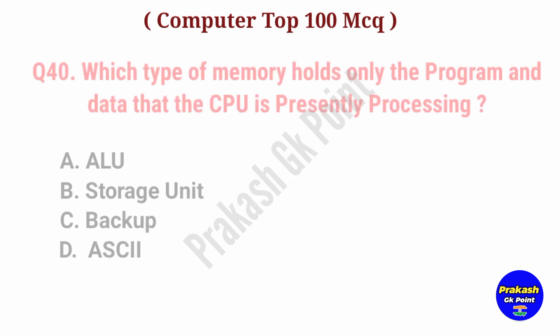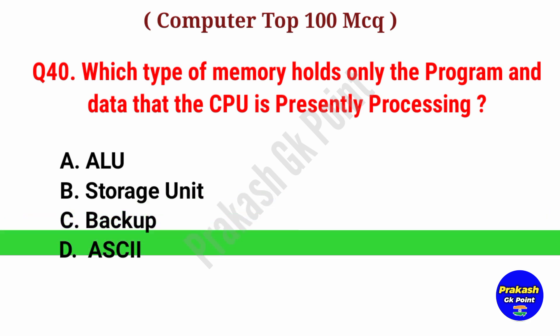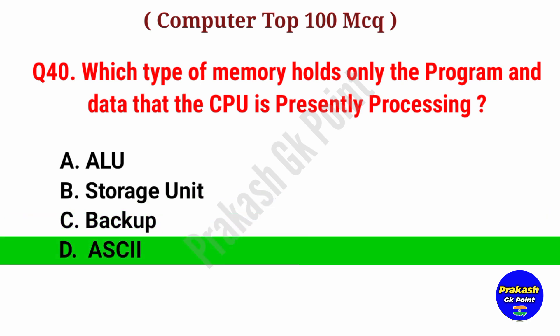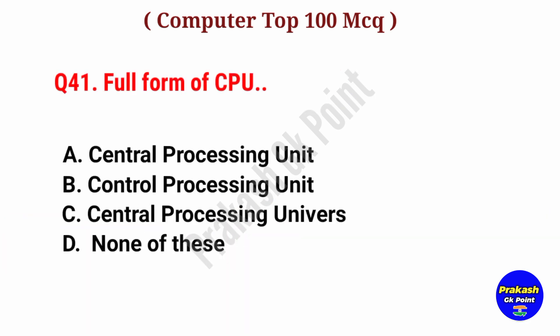Which type of memory holds only the program and data that the CPU is presently processing? Answer: Option D, RAM.